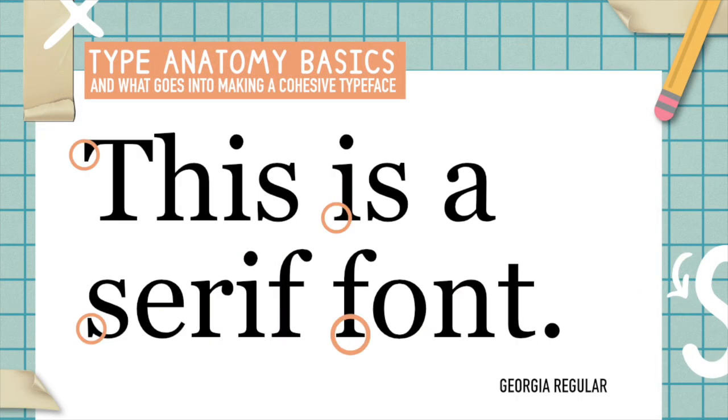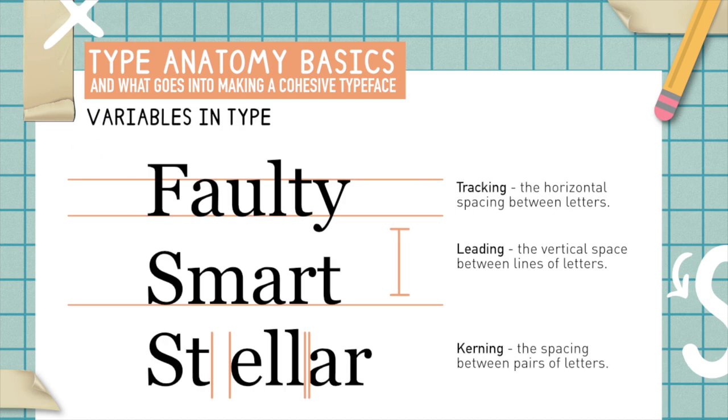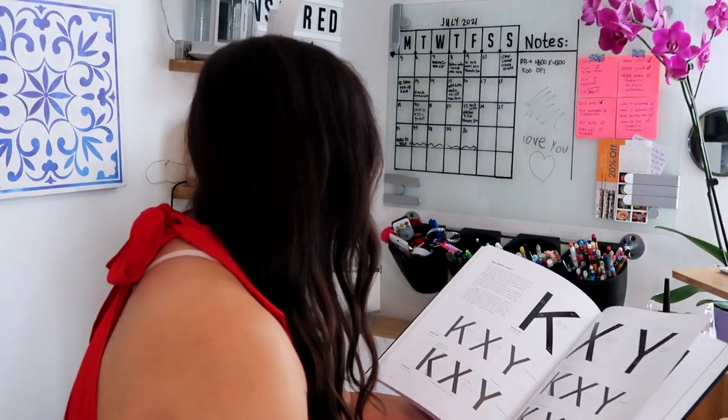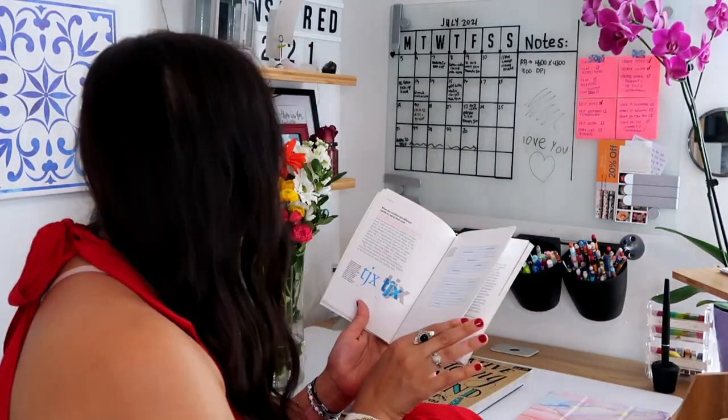We will cover things like typography anatomy basics, the difference between serif fonts and sans serif fonts, the different parts of a letter, and variables to keep in mind when designing type. Then we're going to talk about where to find font inspiration — we'll look at three of my favorite type design and font-related books, ideation for building out your letter styles, and then as we begin to create our font, we will apply those typography basics to create a really cohesive and strong font.